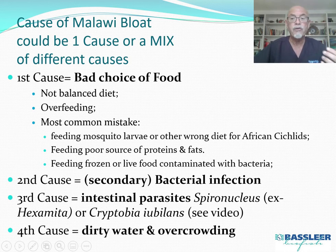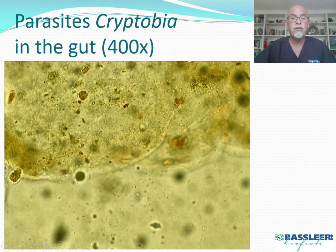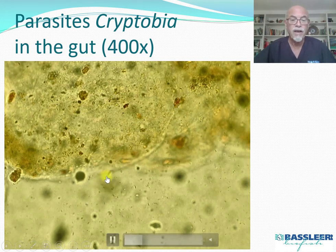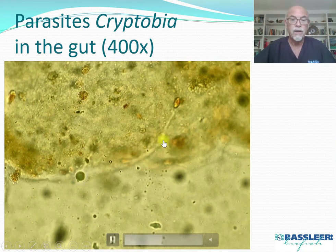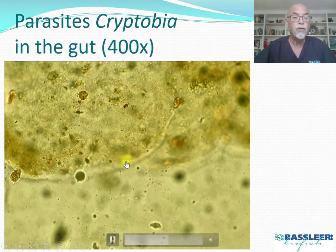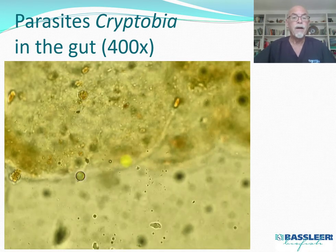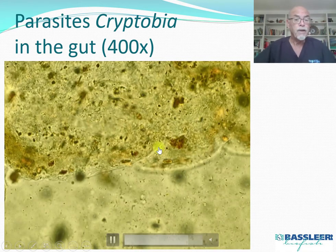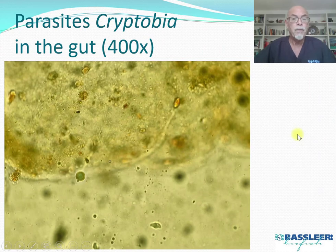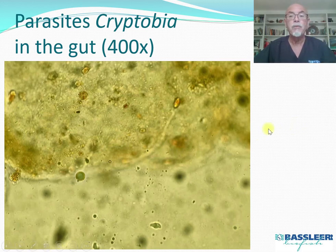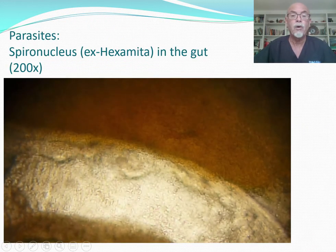Here we see a microscopic observation of Cryptobia, flagellated parasites — look at them swirling around. This is at 400x magnification. They have an impact on the gut flora and the gut lumen, causing a kind of diarrhea and a bad microbiome. This puts the immune system of the fish at risk, because the gut flora is an important part of the immune system. If it weakens, the fish can easily get other diseases.